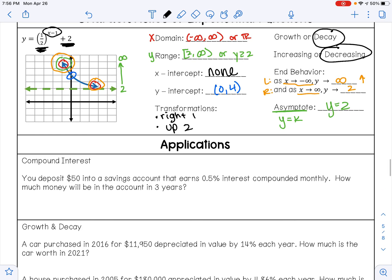We also learned about compound interest. The compound interest formula is A equals P times (1 plus R over N) to the N times T power.